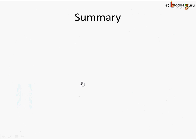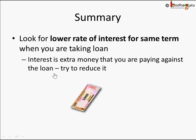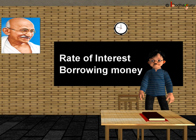So whenever you are comparing, please ensure you look for the lower rate of interest for the same term when you are taking a loan, so that the extra money you pay as interest is minimized. Take a loan with a lower rate of interest, but on the same terms - don't just look at numbers. Is it per annum? Are you comparing per annum with per annum? The simple interest formula is PRT by 100, but pay attention to the rate: is it per annum, per month, or something else? That's all in this lesson, children. Bye bye!